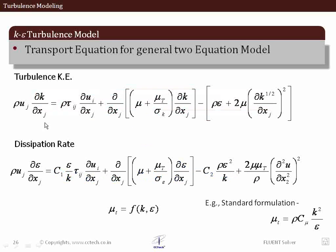So this is just a brief idea about how it works. We have two transport equations for k and for epsilon and they are related to each other. This is a steady state equation and we have the terms on the right hand side, the diffusion and the source terms. There are some modeling constants like c2 and cμ, and ultimately the eddy viscosity is expressed in terms of k and epsilon.